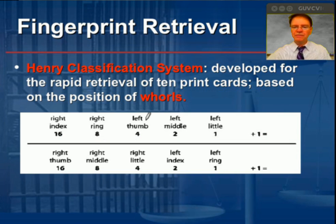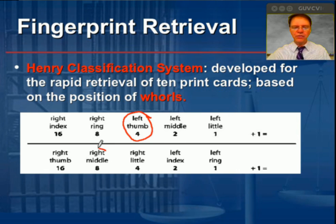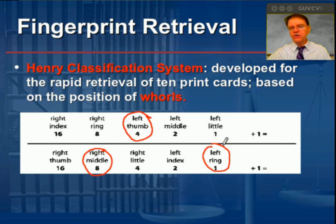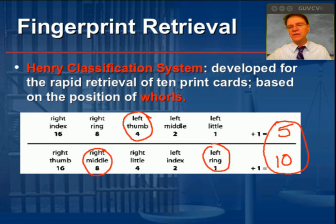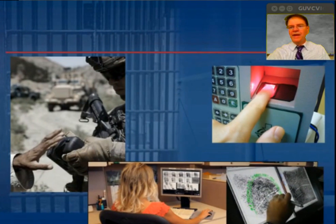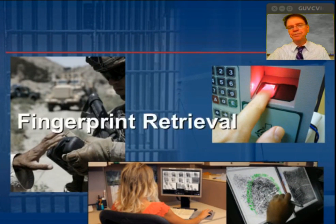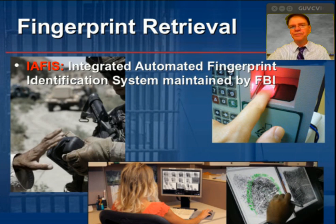Let's imagine a gentleman has a whorl on his left thumb, right middle finger, and left ring finger. We would take the value four and add one, so the numerator would be five. In the denominator, we would have eight plus one plus one, making that ten. So this individual's classification number would be 5 over 10 — and again, we don't convert that into a decimal. With the advent of computers, we're going to develop a whole new system based upon the previous one, but for a much more rapid means of retrieval of fingerprint records.